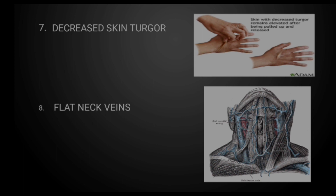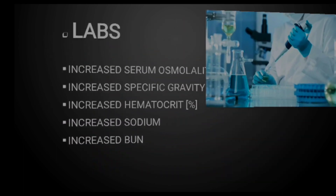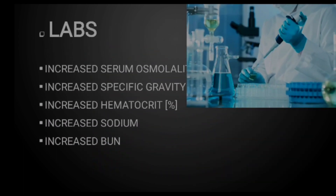Now let's look at the labs for hypovolemia. Remember: concentrated makes the numbers go up. You will see increased serum osmolality, increased urine specific gravity, increased hematocrit level, increased sodium level, and increased blood urea nitrogen, that is increased BUN.